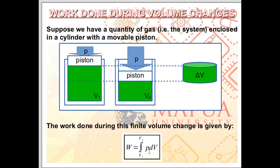Depending on the pressure and the volume change, you have different equations or values for the work done. For instance, if pressure is zero, then zero work is done. If there is no volume change, the resulting delta V is zero, so there is also zero work done. If the pressure P is constant, it is taken outside the integration and we are only integrating dV.